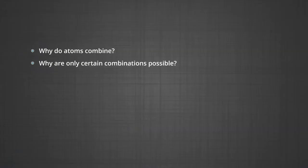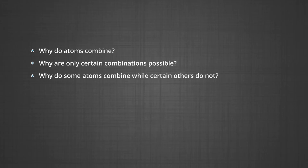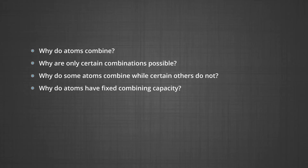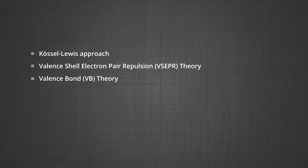The attractive force which holds various constituents like atoms and ions together in different chemical species is called a chemical bond. The formation of chemical compounds takes place as a result of combination of atoms in various ways, raising many questions: Why do atoms combine? Why are only certain combinations possible? Why do some atoms combine while others do not? Why do atoms have fixed combining capacity? Why do molecules possess definite shapes? Every system tends to be more stable, and bonding is nature's way of lowering the energy of the system to attain stability.